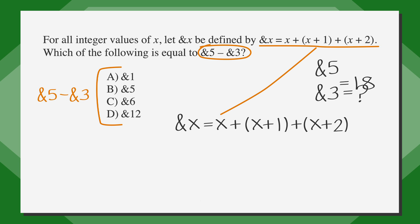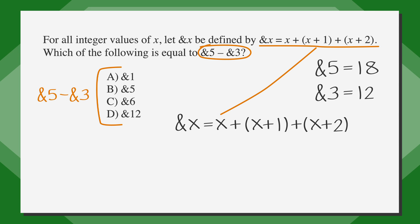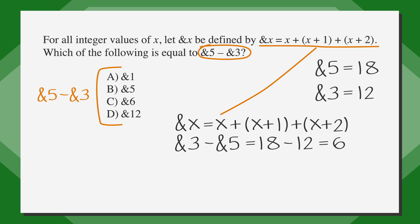Now we need to calculate the value of ampersand-3, so let's substitute 3 for x. Our equation for ampersand-3 becomes 3 plus (3 plus 1) plus (3 plus 2), or 3 plus 4 plus 5, which equals 12. We now know that ampersand-5 is equal to 18 and ampersand-3 is equal to 12.